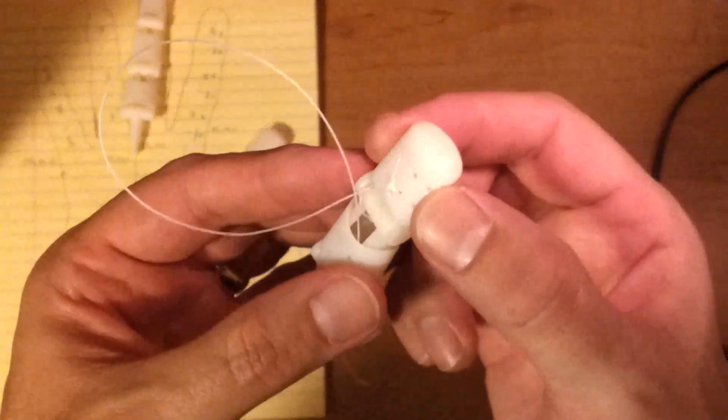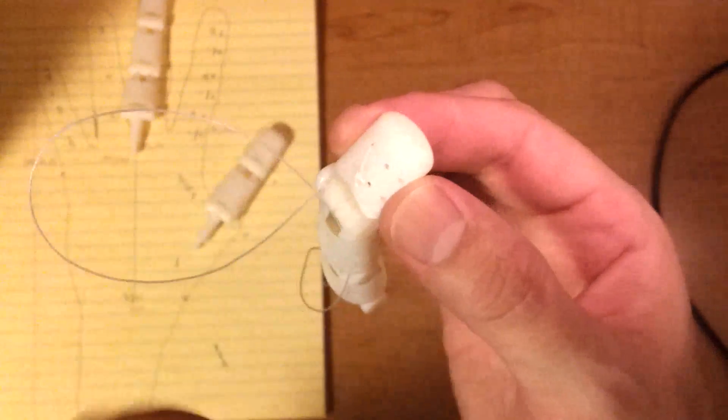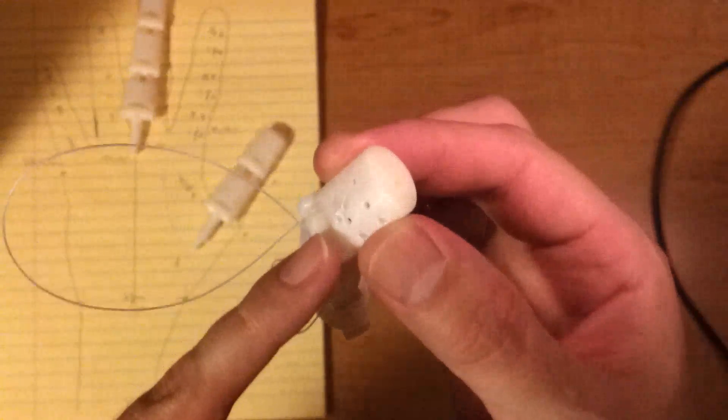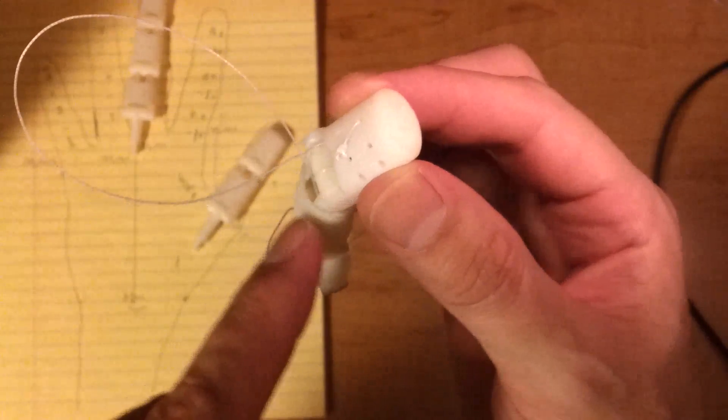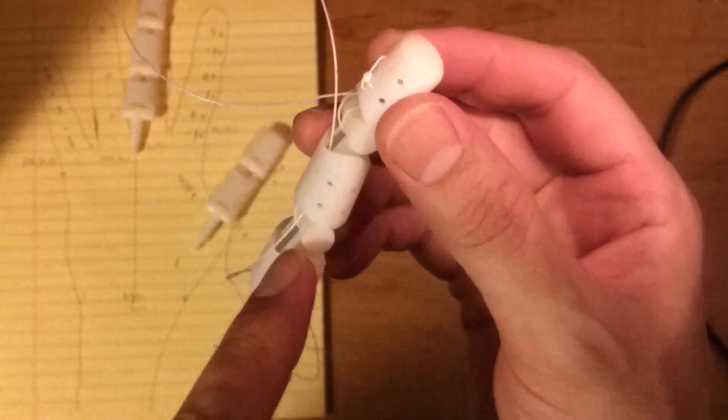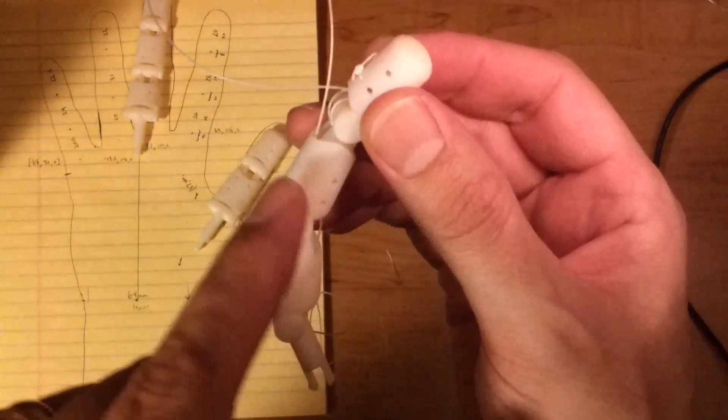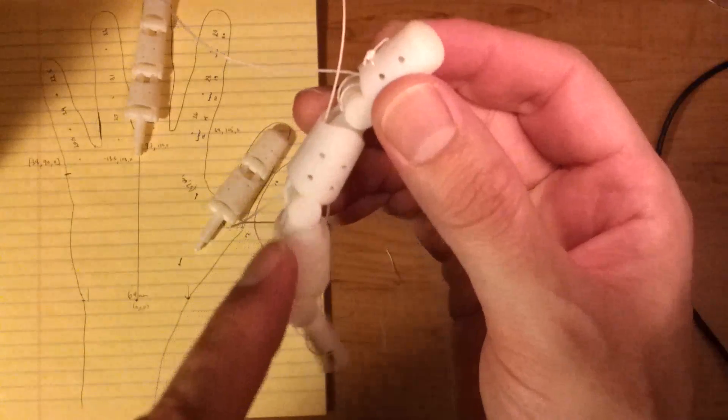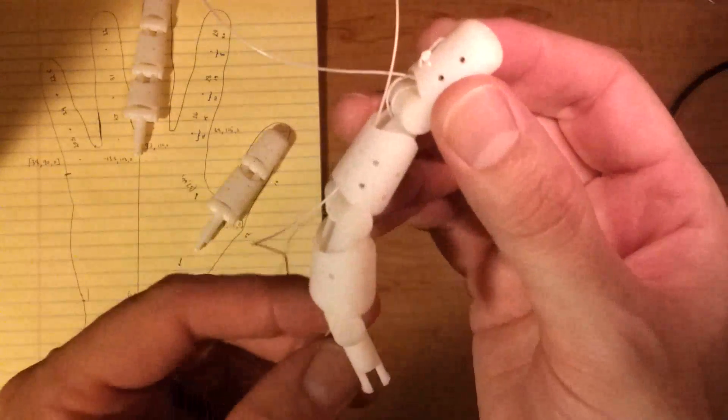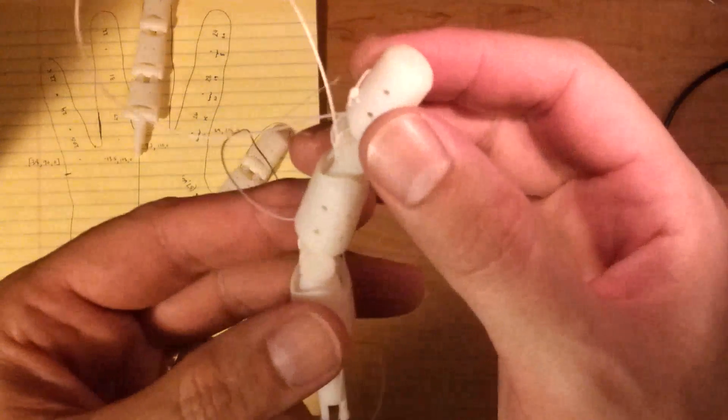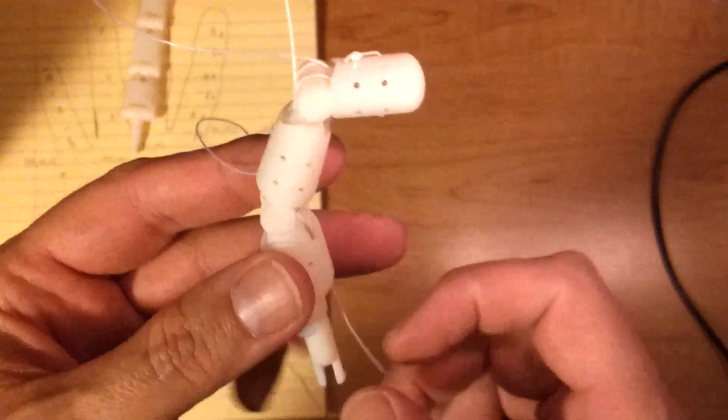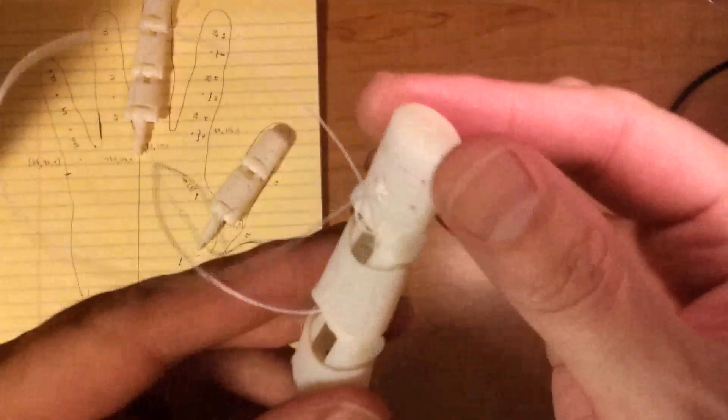The tail curls counterclockwise around the pin joint and then down counterclockwise again around this joint and down, and then that emerges on the other side.